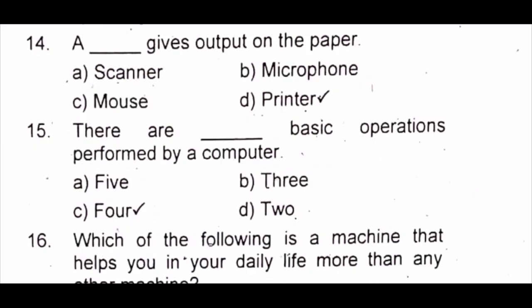Question 14: A dash gives output on paper. A) scanner B) microphone C) mouse D) printer. The answer is D) printer.